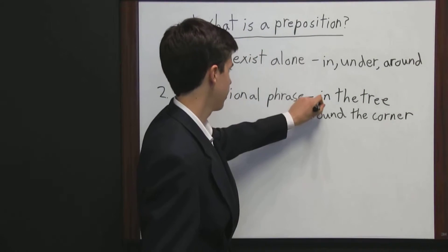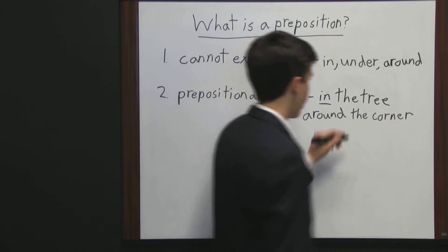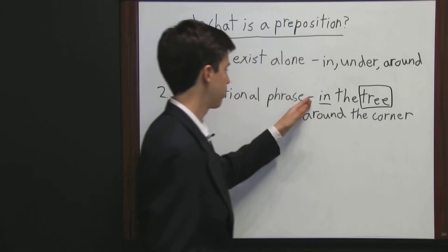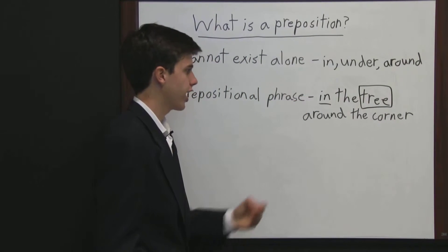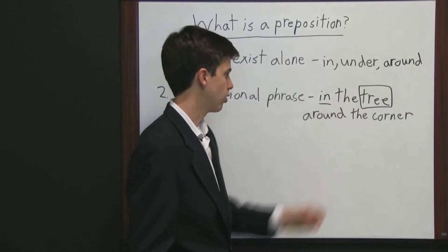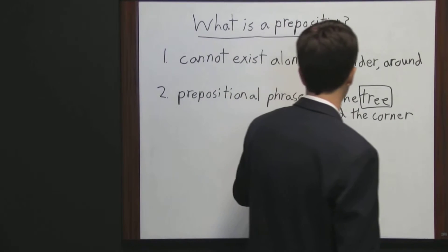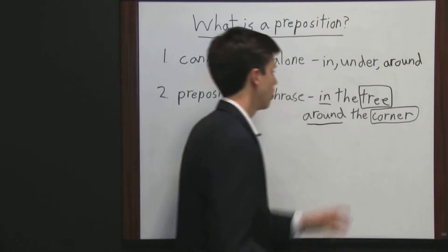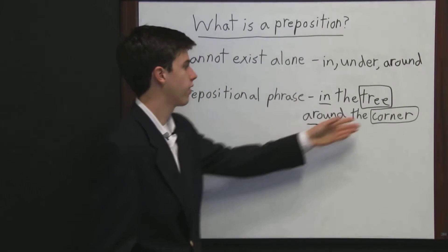In would be a preposition, and tree is what we call the object of the preposition. If we just have the preposition in, we're wondering in what? It's in the tree. Or around the corner - around is a preposition, and corner is the object of the preposition. We don't know what's around. It's around the corner.